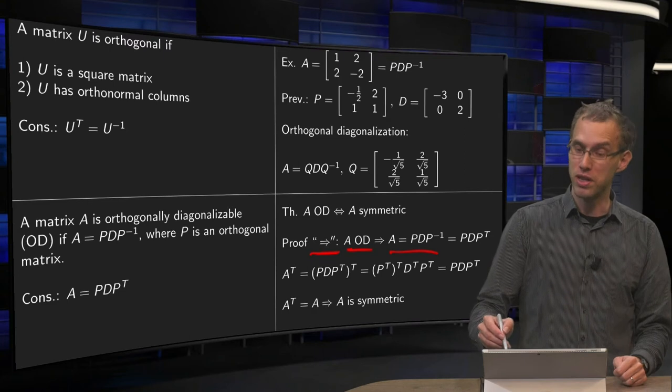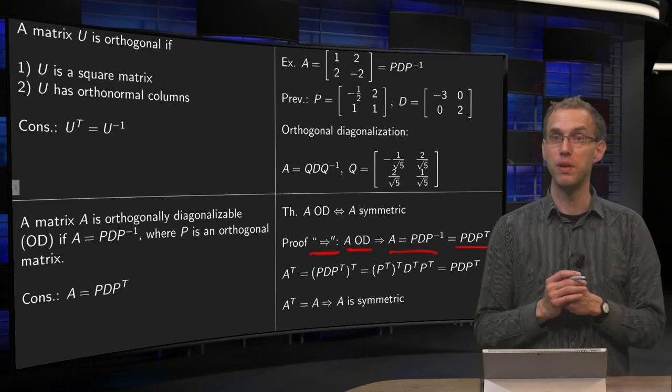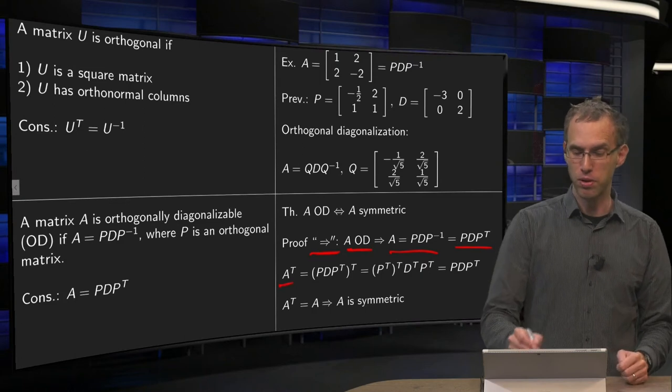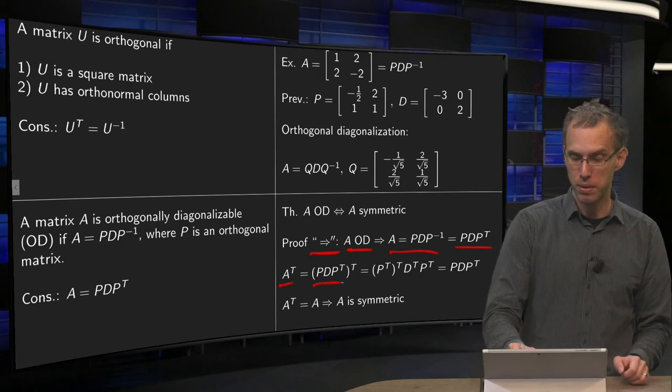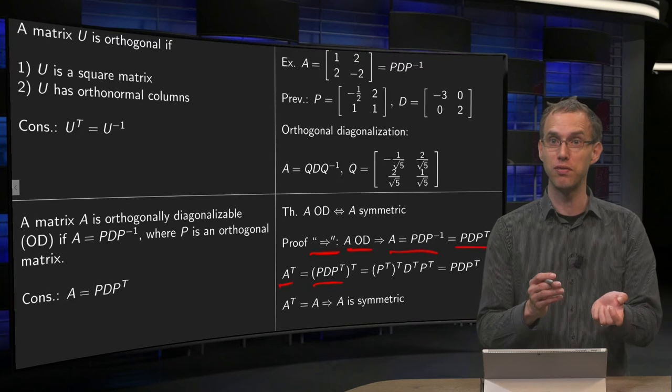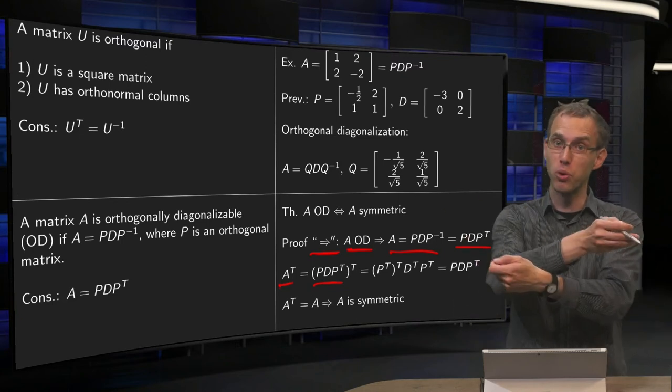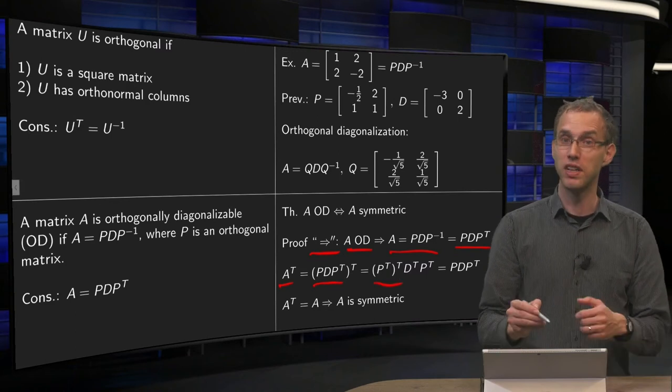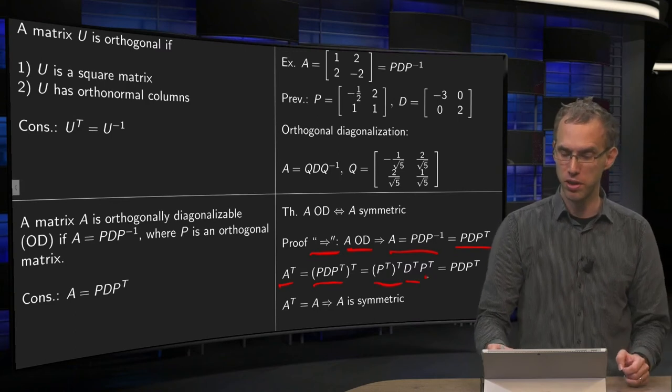So this side is easy. Suppose A is orthogonally diagonalizable. That means that you have A equals PDP inverse and we are going to prove that A is symmetric in that case. Well, our P is orthogonal then, so we have P inverse equals P transpose. Now if you compute the transpose of A, we know A equals PDP transpose. So if you take the transpose of that, you have to invert the order and take all the transposes everywhere.